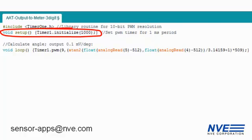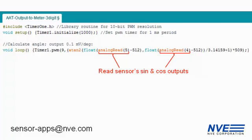We initialize the PWM timer. The main program is only one line where we read two sensor outputs and calculate the angle using a two-variable arc tangent.